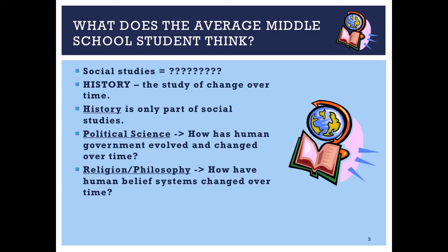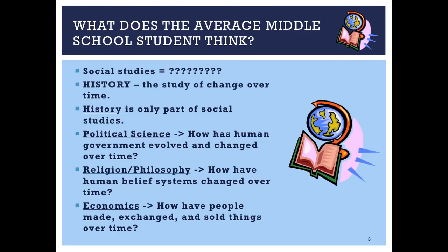Religion and philosophy are also fascinating topics. Religion has to do with a human belief in a god or deity, and philosophy has to do with human beliefs about life that are not necessarily connected to god — that's the easiest way to differentiate between those two terms. Finally, we have economics, which is how people make, exchange, and sell things. Money has not always existed, so the economic system where you take money and buy something is a fairly modern idea, and one of the things we'll be studying this semester is how those systems developed over time.